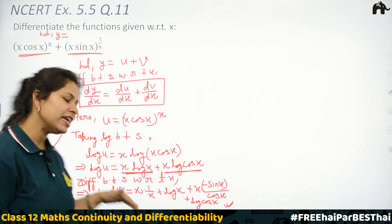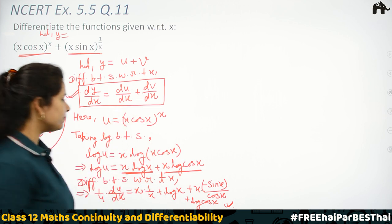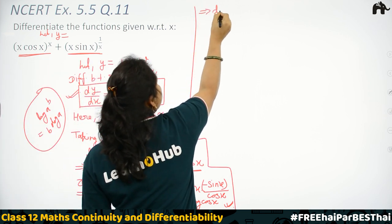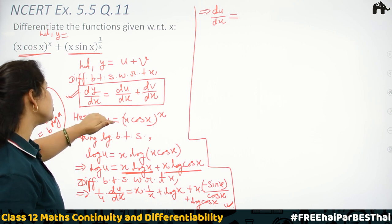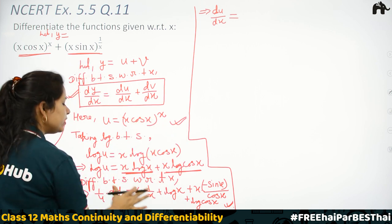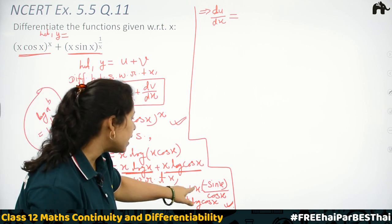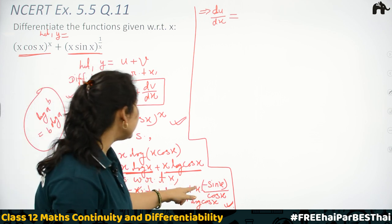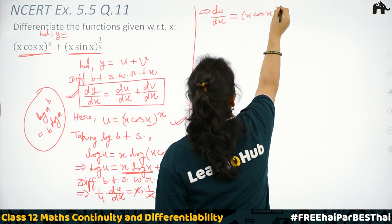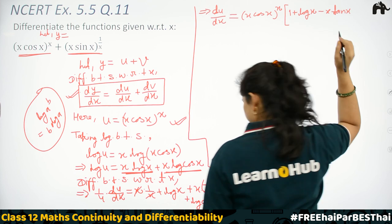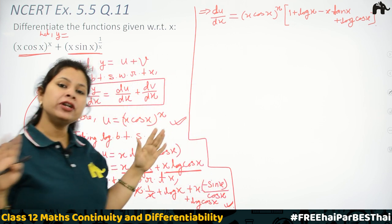So du/dx = u multiplied by the whole right-hand term. Substituting u = x·cos(x)^x, and simplifying: x/x cancels to 1, sin/cos becomes tan. So du/dx = (x·cos x)^x · [1 − x·tan x + log(cos x)]. That completes the calculation of du/dx.